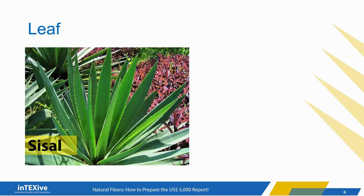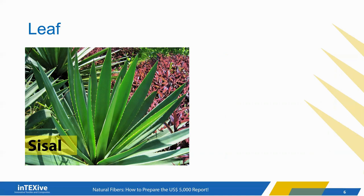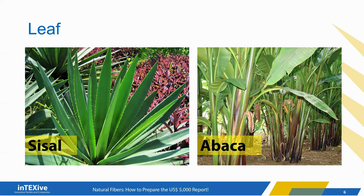Examples of leaf fibers include sisal, a fiber extracted from a cactus leaf belonging to the agave family. It is native to South America but also grown in Kenya and other parts of Africa. Another amazing leaf fiber is abaca, also known as manila hemp or just manila, which is native to the Philippines and obtained from the leaves of a tree called Musa textilis — a close relative of the banana. Recently, there has been growing interest in pineapple and banana leaf fibers as well.